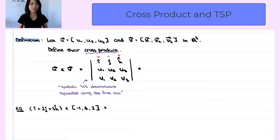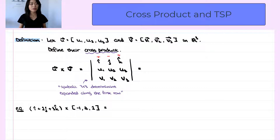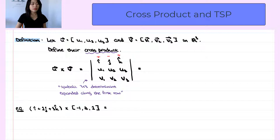Let's start with the cross product. Suppose we have two vectors, u and v, and they are in R3, so they have three components. We define their cross product as follows. We write the cross product in R3 as a 3 by 3 determinant.